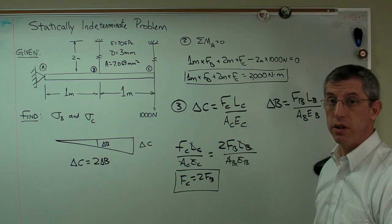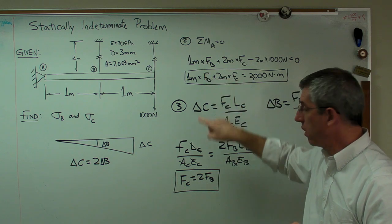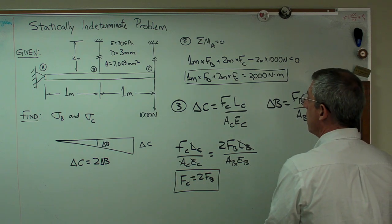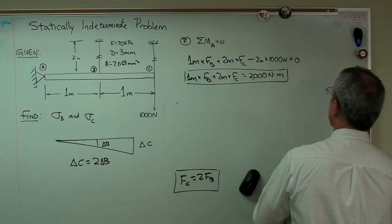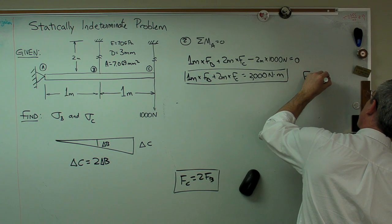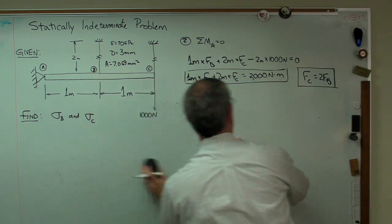Now I have two equations and two unknowns. The same unknowns, Fc and Fb, that show up here are there. And all I've got to do now is solve. So I'm going to erase this, clear out some space here. I'm going to write my other equation right there, and clear the rest of this out.